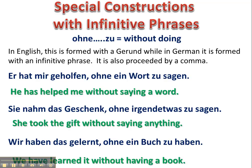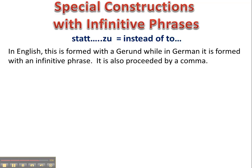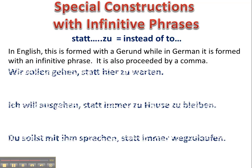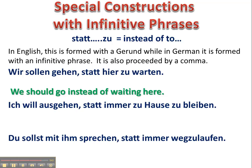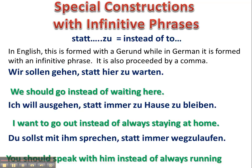Another construction using an infinitive phrase is 'statt zu.' This is also formed in English with a gerund but in German with an infinitive phrase. 'Wir sollen gehen statt hier zu warten' means 'we should go instead of waiting here.' 'Ich will ausgehen statt immer zu Hause zu bleiben' — go out instead of staying home all the time. 'Du sollst mit ihm sprechen statt immer weg zu laufen.'